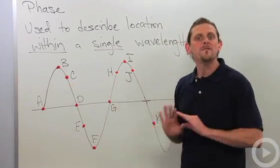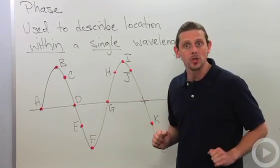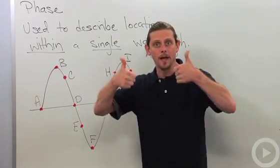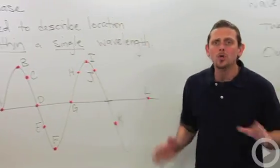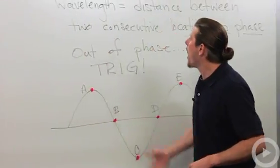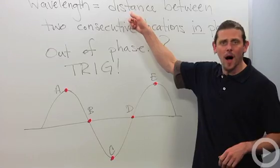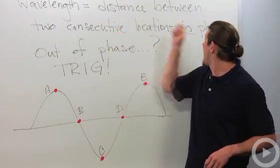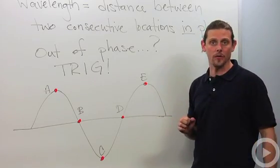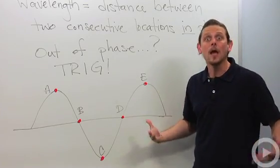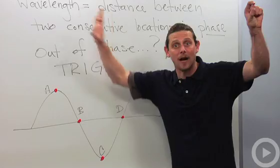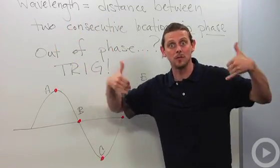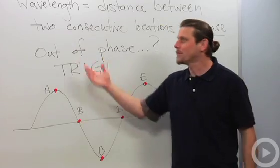All right, fairly simple - same place, doing same thing: in phase. So why do we care about this? Well, a wavelength can be defined as the distance between any two consecutive locations that are in phase with each other. So that's kind of nice - it means I don't need a crest and a crest or a trough and a trough, I just need phase, same phase: done, wavelength.